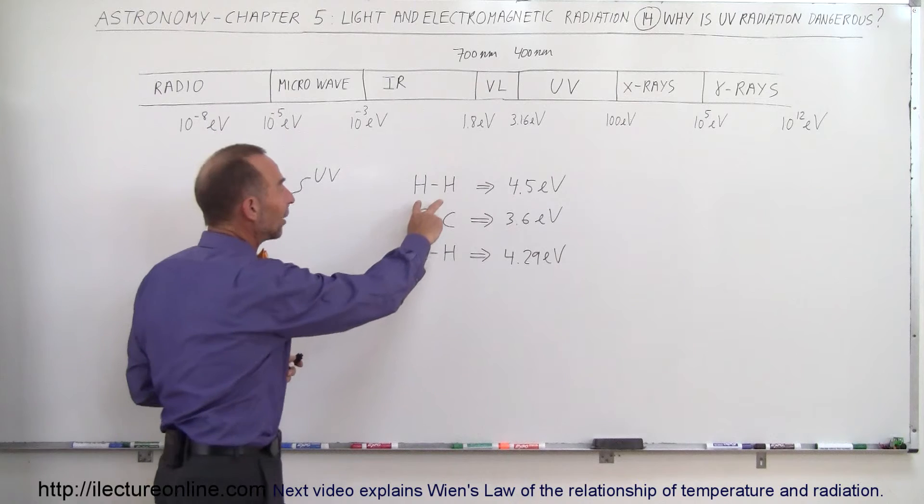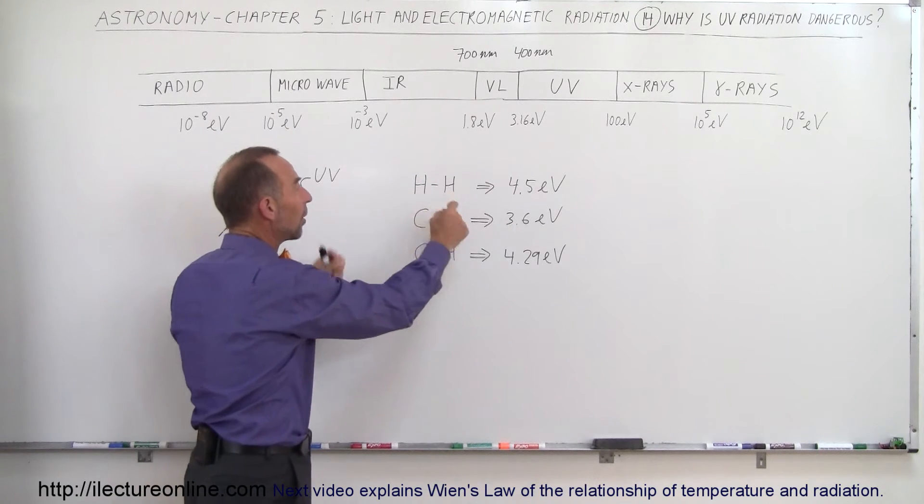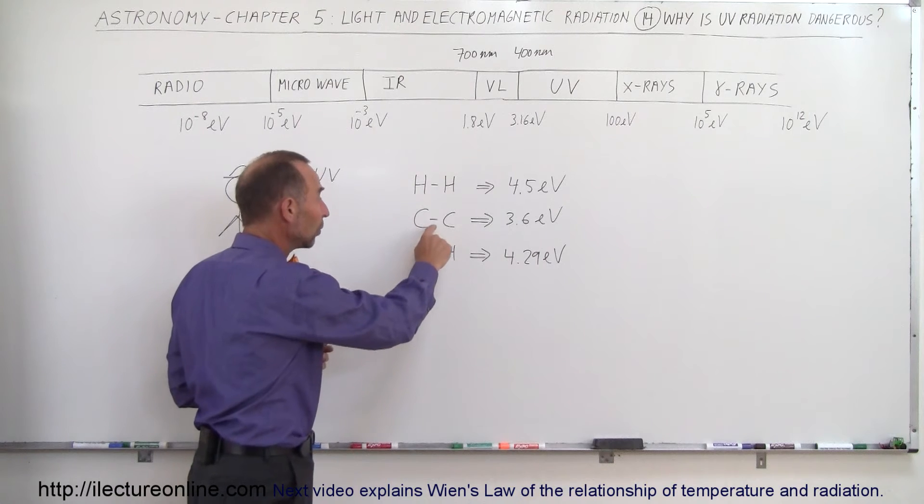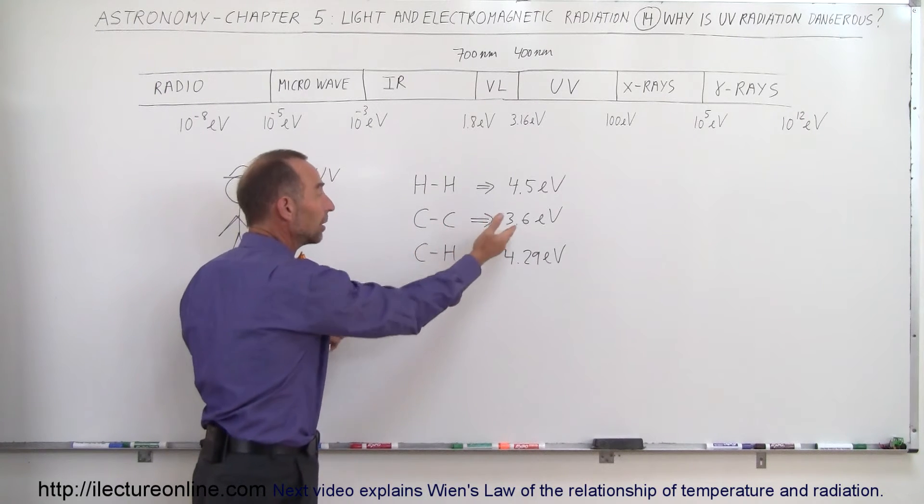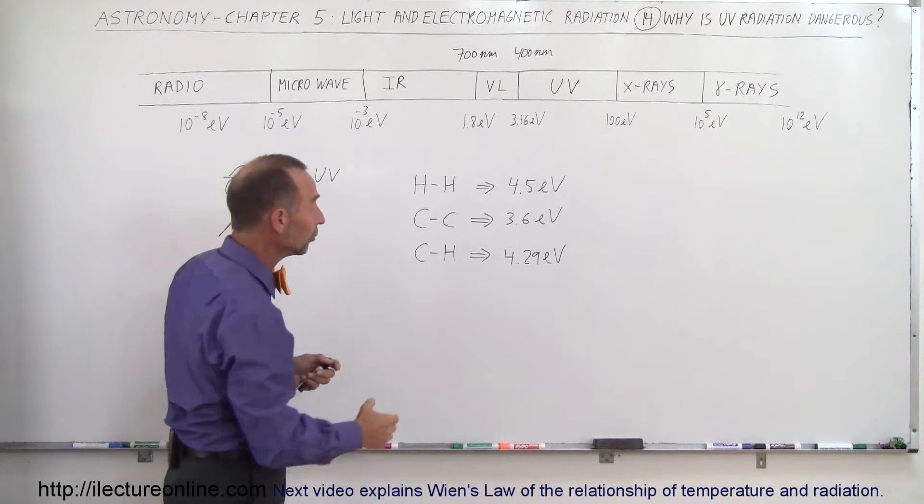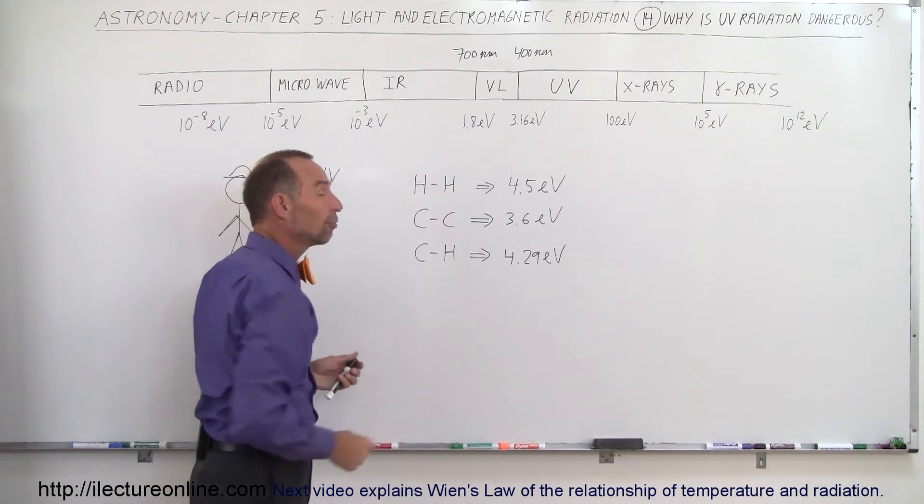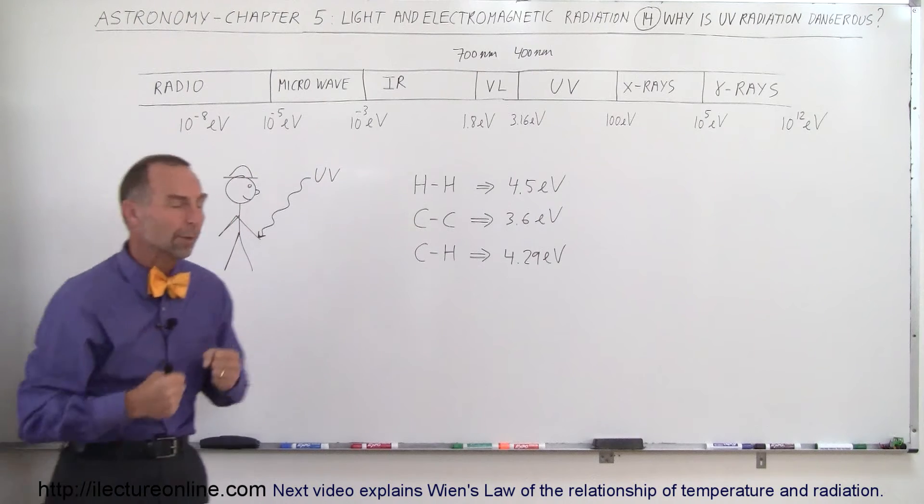For example, to take two hydrogen atoms and break them apart, that takes about 4.5 electron volts. To take two carbons with a single bond between them and break them apart, that takes about 3.6 electron volts. And when you have a hydrogen bonded to a carbon like this, it takes about 4.29 electron volts to break them apart.